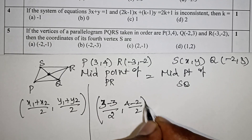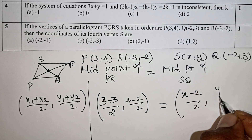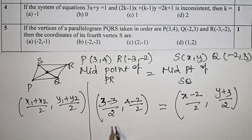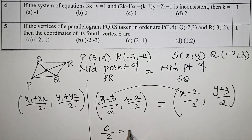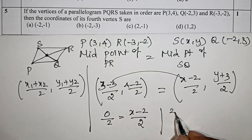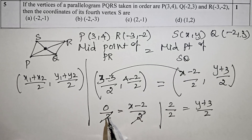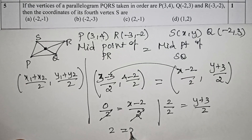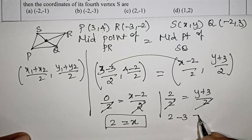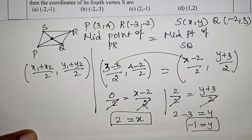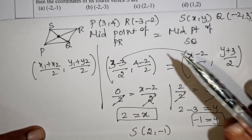Applying the midpoint formula: for the x-coordinate, (3 + (-3))/2 = 0/2 = 0, and x of Q gives x of S = 2. For the y-coordinate, (4 + 2)/2 = 3, and with Q's y-value, S's y = -1. So the fourth vertex S is (2, -1), which is option C, the correct answer.